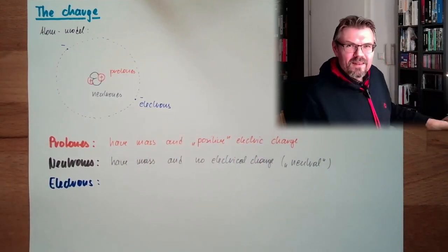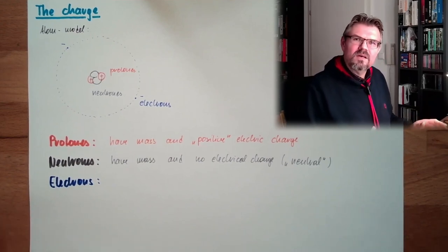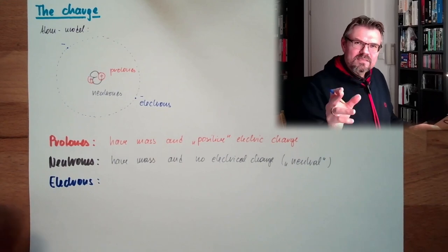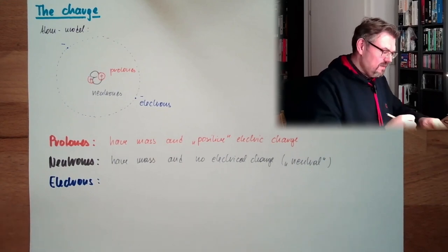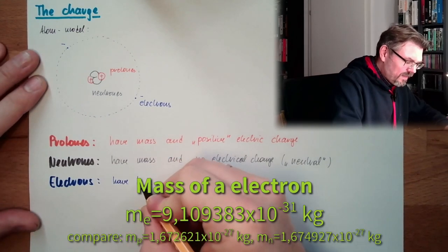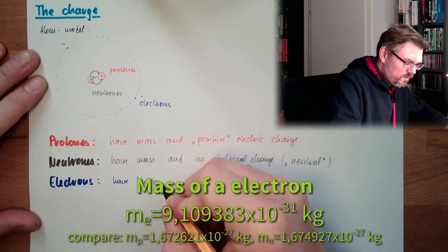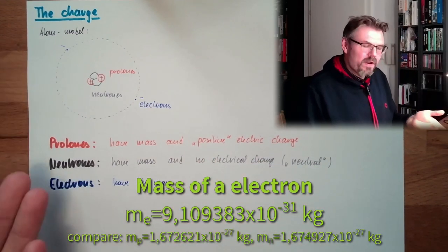And then we have the electrons. A long time people thought, do electrons have mass? And so, they have mass but significantly smaller mass. They have tiny mass.